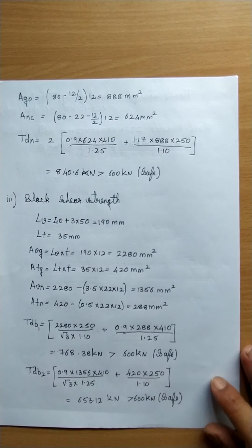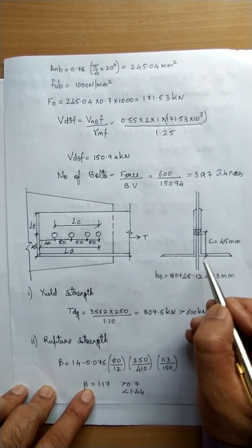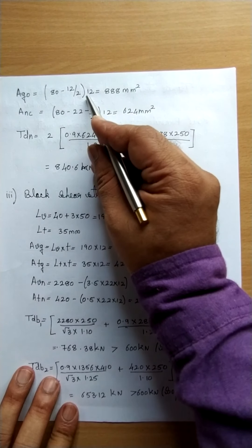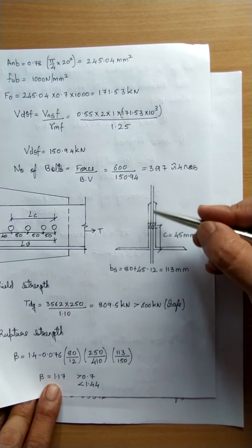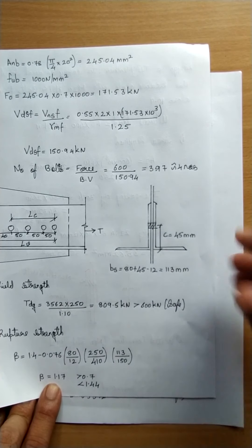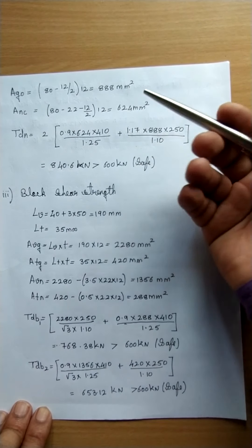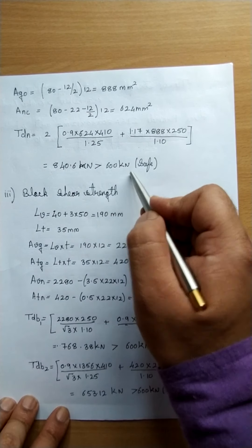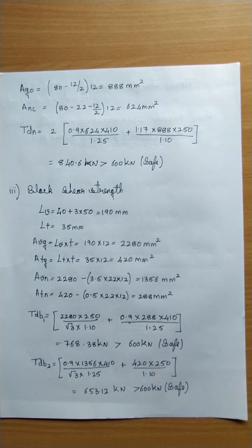Ago (gross area of outstanding leg) = (80 − 12/2) × 12. Anc (net area of connected leg) = (80 − 22 − 12/2) × 12, deducting the bolt hole. Substituting into the Tdn formula and multiplying by 2 for the double angle section gives Tdn = 840.6 kN, which is greater than 600 kN. No revision is required.